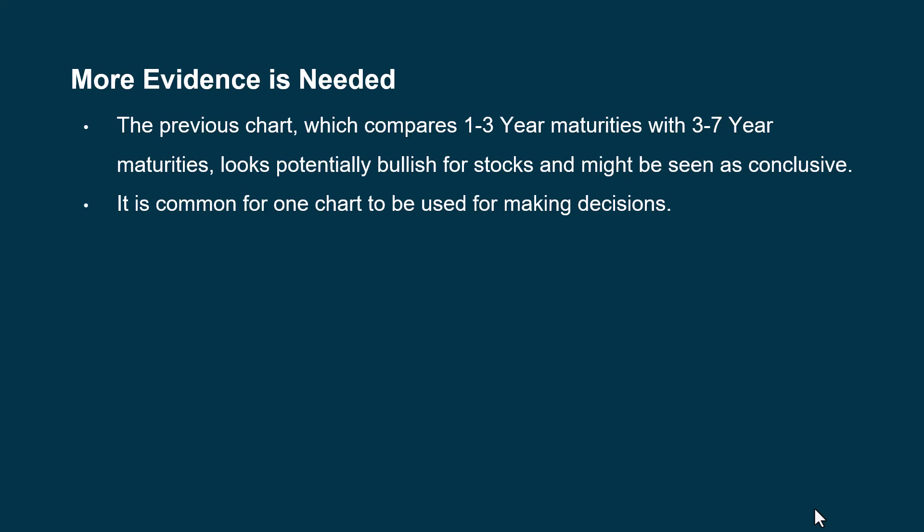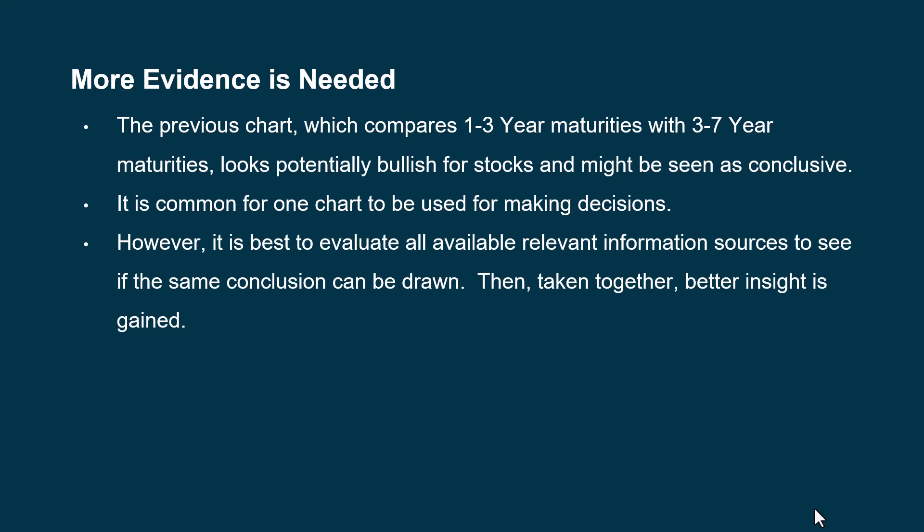Yes, there can be analysis paralysis where you're looking at all kinds of things, and there's usually positive and negative things all at the same time. But over the years, I've developed a system where I'm trying to get into that consensus of do we look positive, negative, or sideways? It's best to evaluate all of the available relevant information sources to see if we can draw the same conclusion. We take everything together and get better insight as to where we're at, and then that helps us make better decisions.